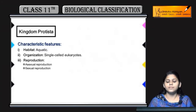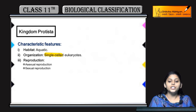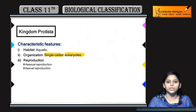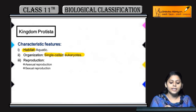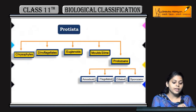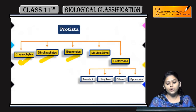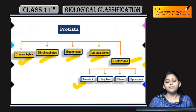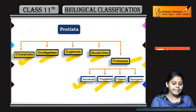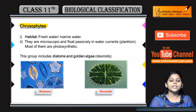Kingdom Protista ki organization kya hai? They are unicellular or single-celled eukaryotes — eukaryotes means inke paas organelles present hongi. Inka habitat aquatic hai, means woh water mein rahte hai. Reproduction can be asexual or sexual both. Further, Protista is subdivided into five classes: chrysophytes, dinoflagellates, euglenoids, slime molds, and protozoans. Protozoans are further subdivided into four: amoeboid, flagellated, ciliated protozoans, and sporozoans.